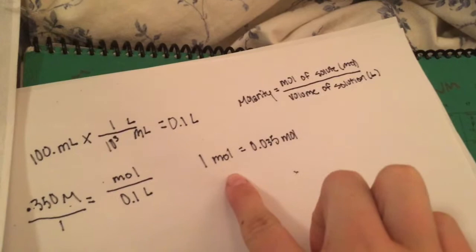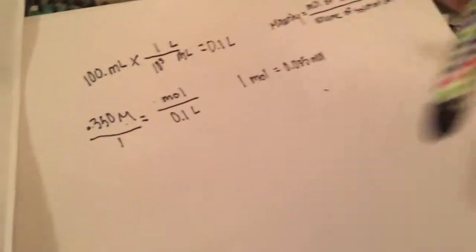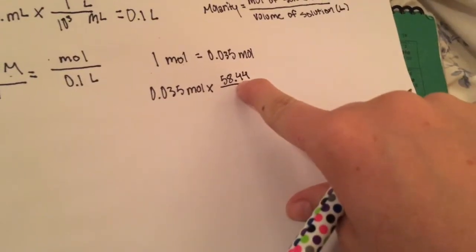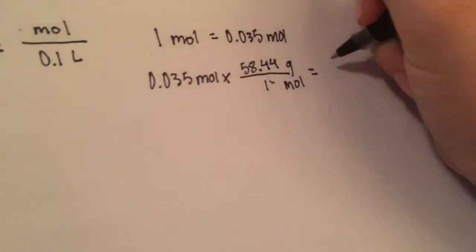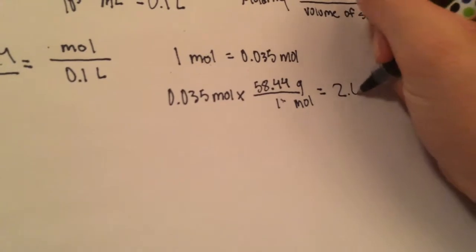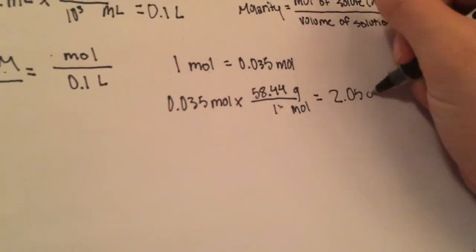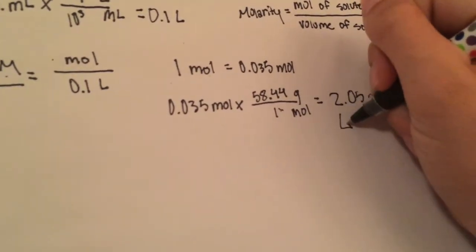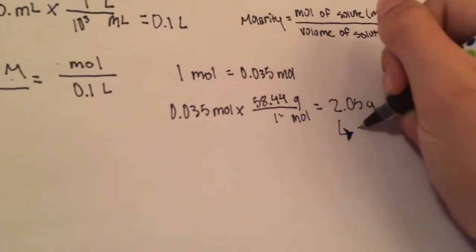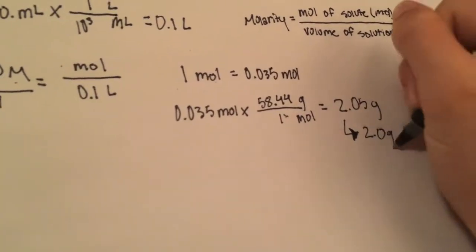Since we can't measure moles in the lab, we have to convert moles to grams. And we get this number from the molar mass of NaCl. This equals 2.05 grams, which would be measured as 2.0 grams in the lab.